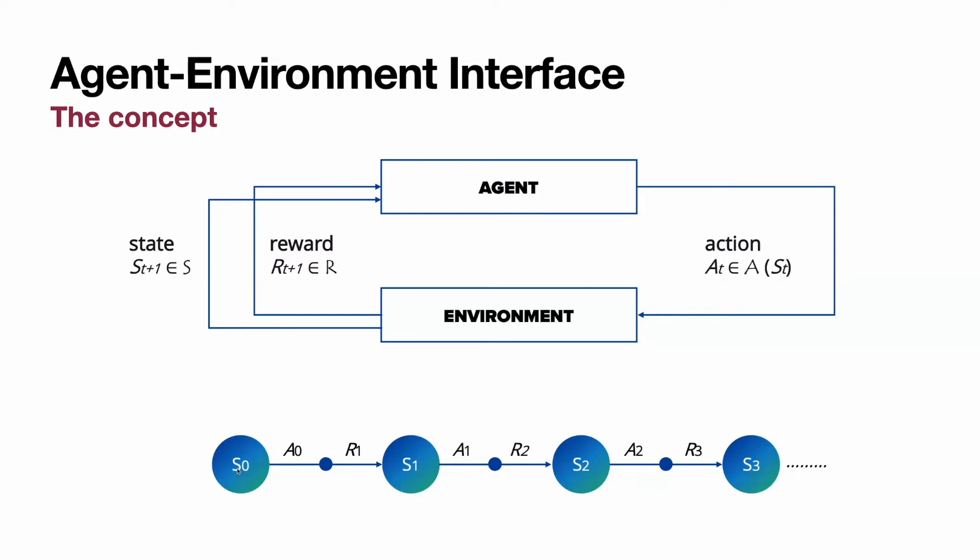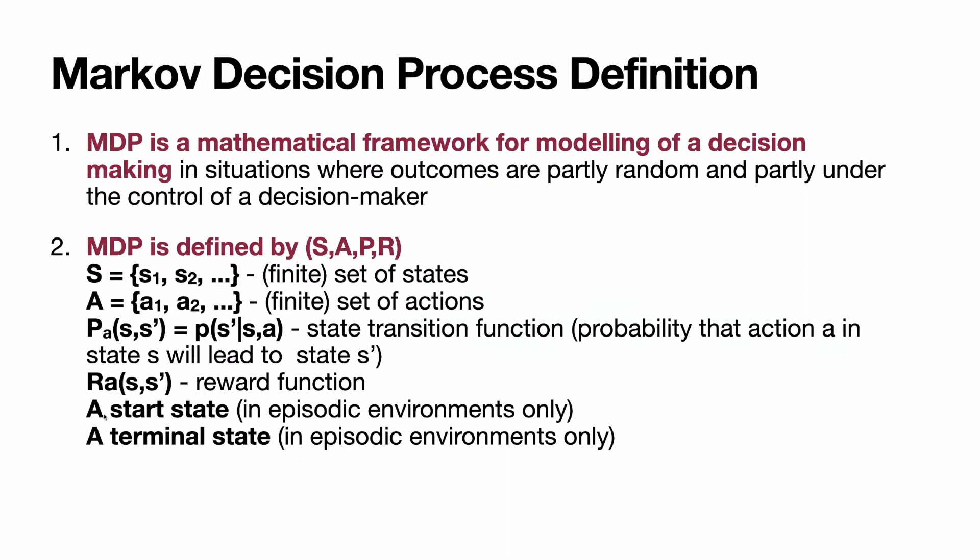In episodic tasks, there are a start state and a terminal state. Start state is where we begin our interaction, and the terminal state is a state where the interaction with environment ends. Reusing our example of chess, start state would be all figures are on their initial locations on the board. And the terminal state would be one of the possible three situations: draw, white win, or black win. There are three terminal states.